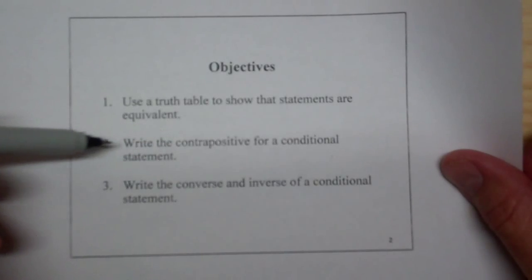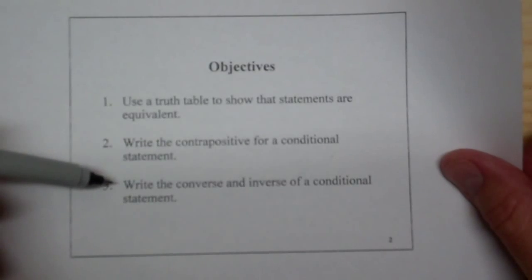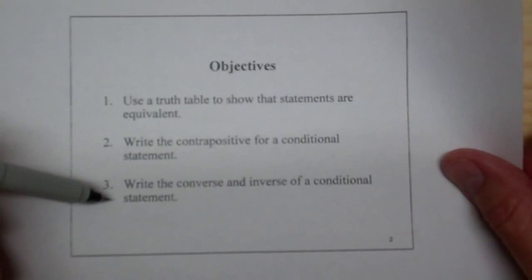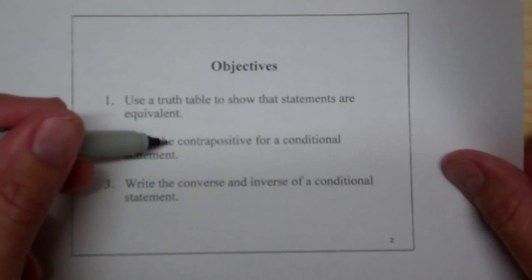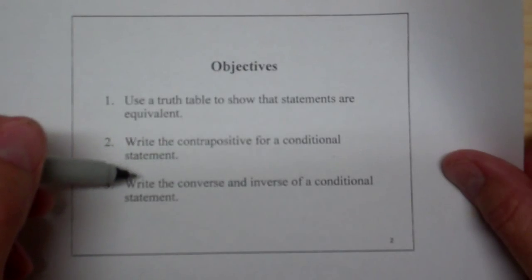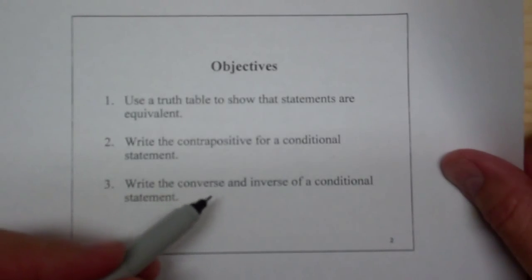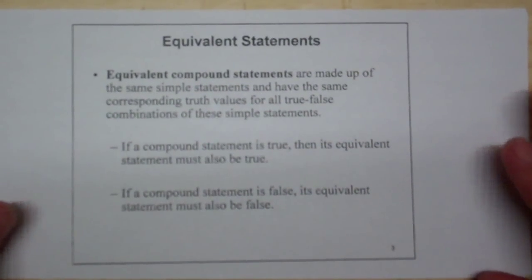We want to write the contrapositive for a conditional statement, and we want to write the converse and inverse of a conditional statement. As we're going to see, the contrapositive has the same truth table, but the converse and the inverse also have the same truth table as each other. So now we want to talk about equivalent statements.